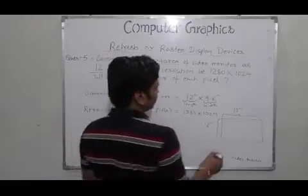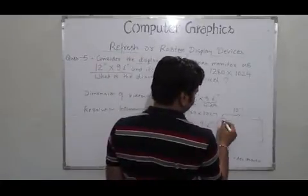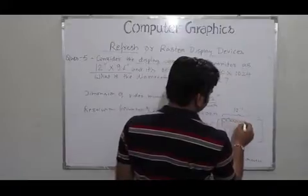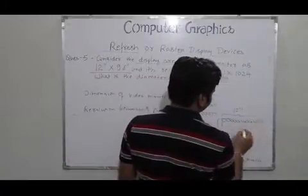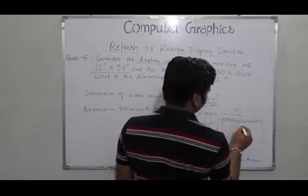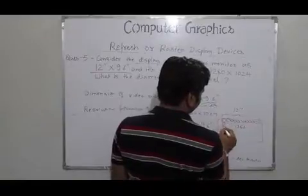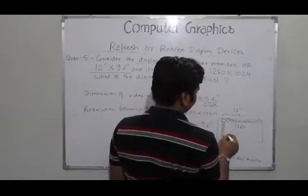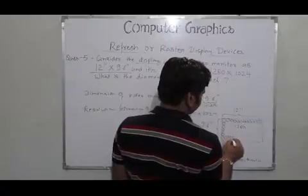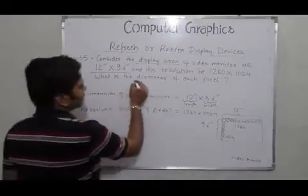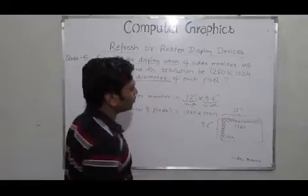The pixels in the horizontal direction is 1280, and the pixels along the vertical direction is 1024. We are required to find out the diameter of each pixel.